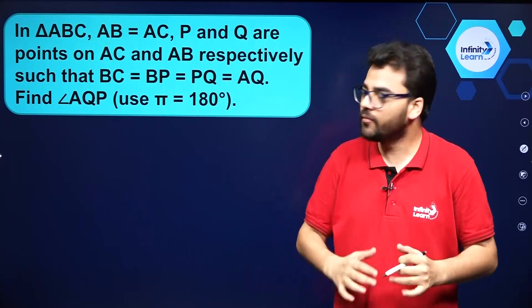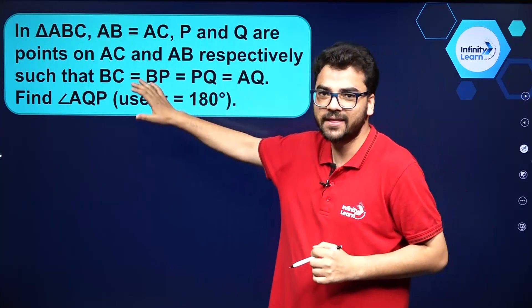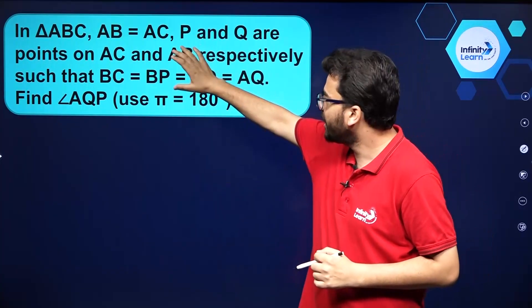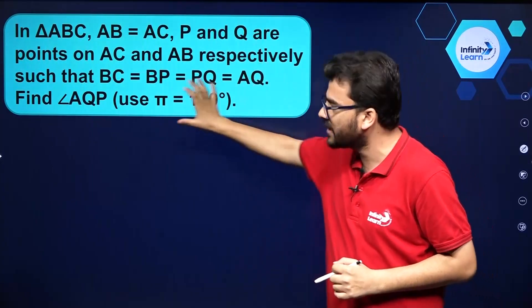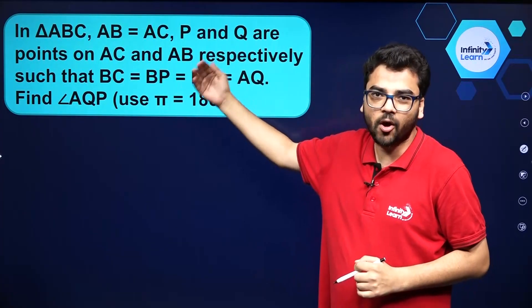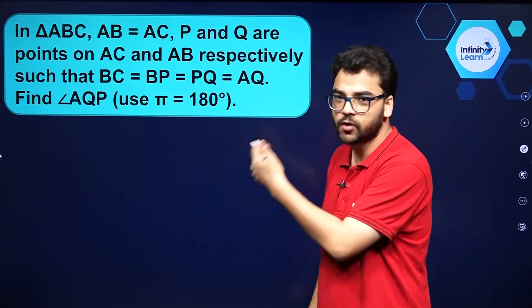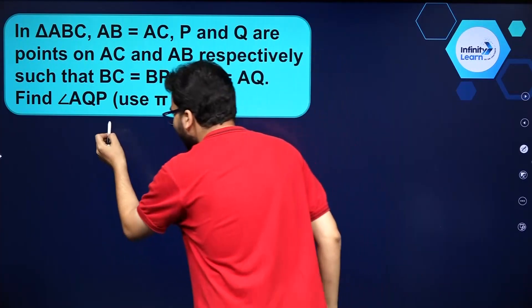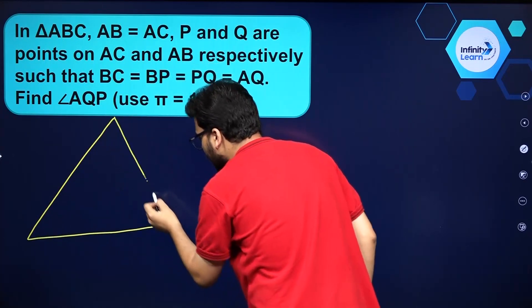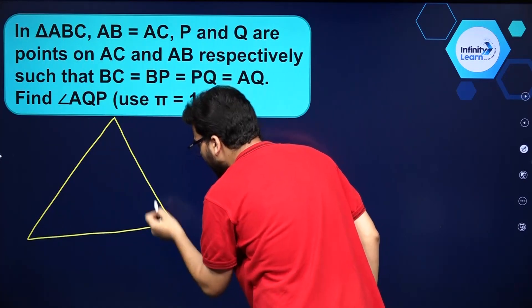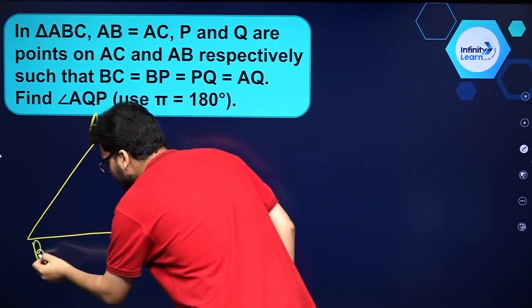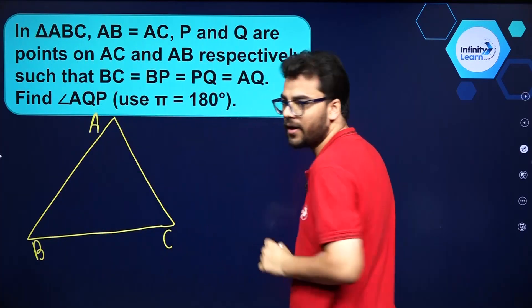Hello everybody. Here we have a question in which there is a triangle ABC in which AB is equal to AC. Let's draw the figure according to the given question and then solve it. We have triangle ABC in which AB is equal to AC.